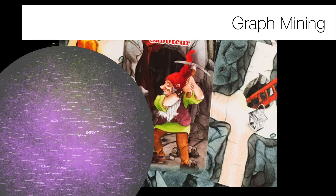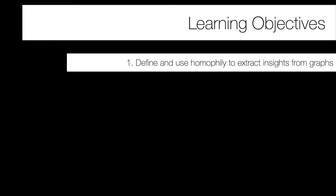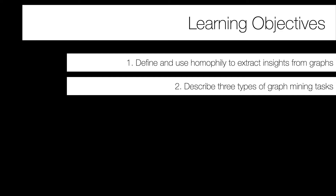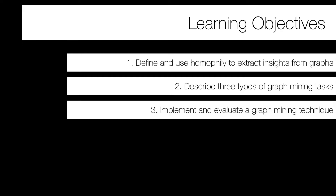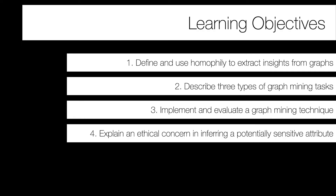Now moving into the material for graph mining. We have four primary learning objectives: define and use homophily to extract insights from graphs; describe three types of graph mining tasks; implement and evaluate graph mining techniques; and explain an ethical concern in inferring a potentially sensitive attribute.